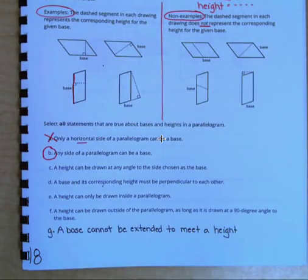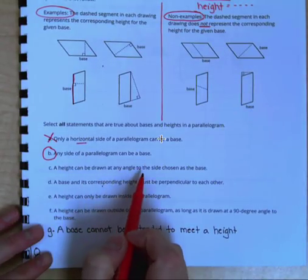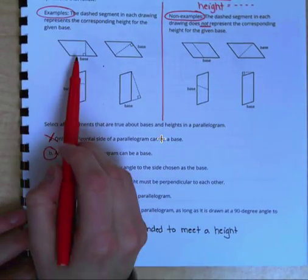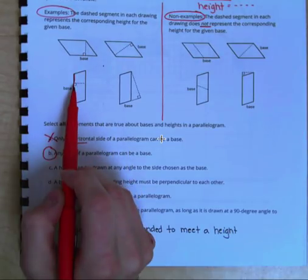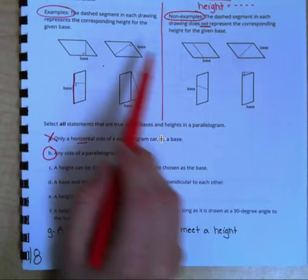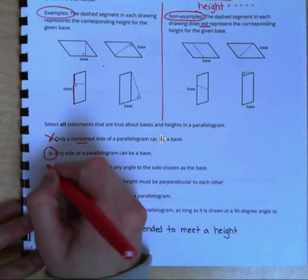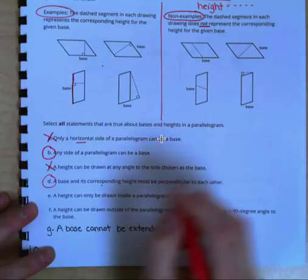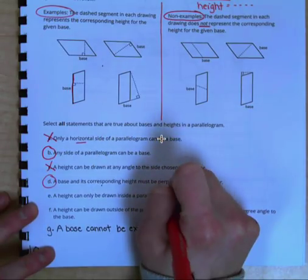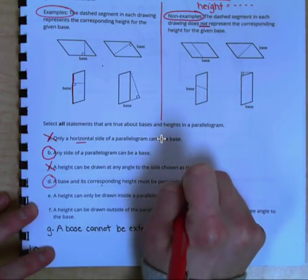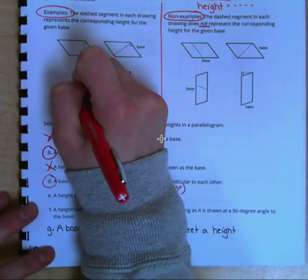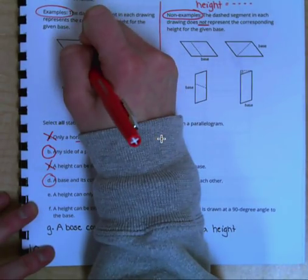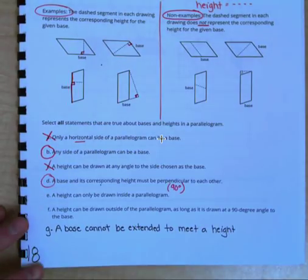It says that a height can be drawn at any angle to the side. Well, if we pay attention to our heights here, we notice they all have the 90-degree angle symbol. So this one is false. A base and its corresponding height must be perpendicular to each other. That one plays off of letter C, which means this one is true, because perpendicular means that it forms a 90-degree angle. And right here is our 90-degree angle symbol on each of our examples.